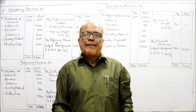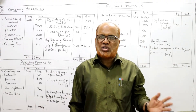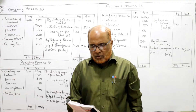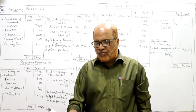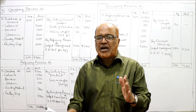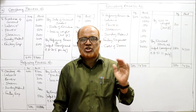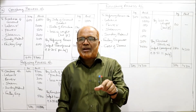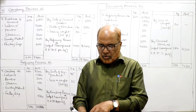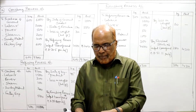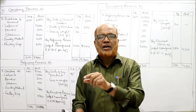Problem 16 is exactly similar to problem 15. An oil producing company maintains three processes — crushing, refining, and finishing. It introduced 600 kilograms of coconut worth rupees 6000 in the crushing process. The other expenditures are labour, power, steam, sundry material, and factory expenses — all these expenses should be taken to the debit side of the respective process accounts.